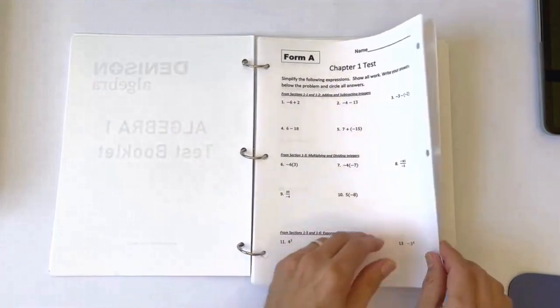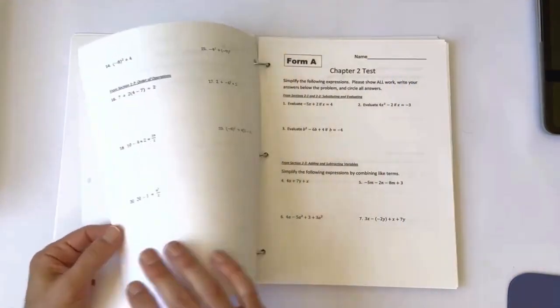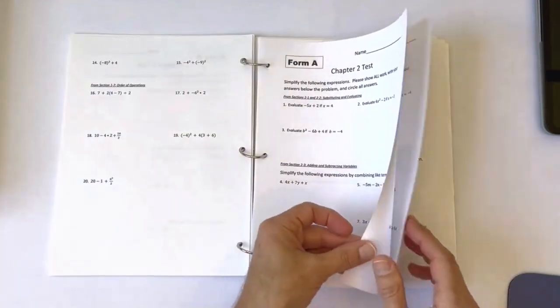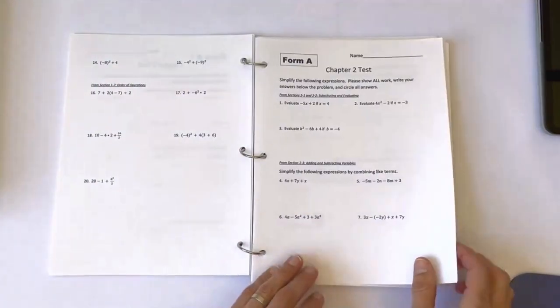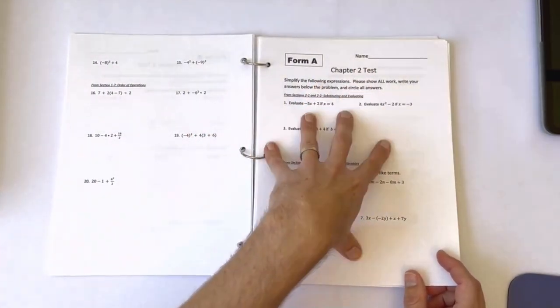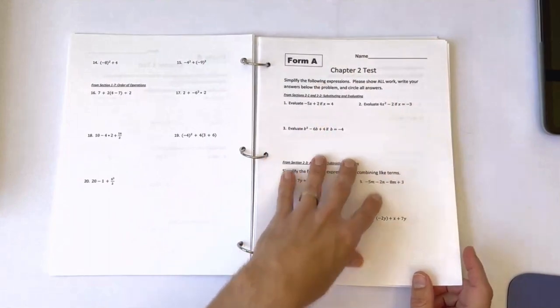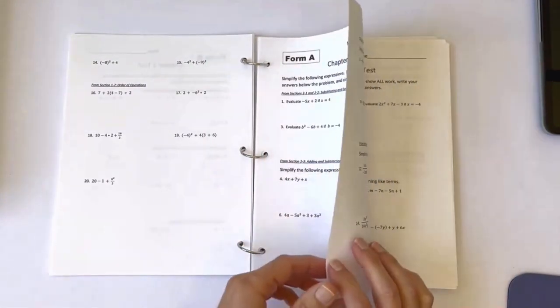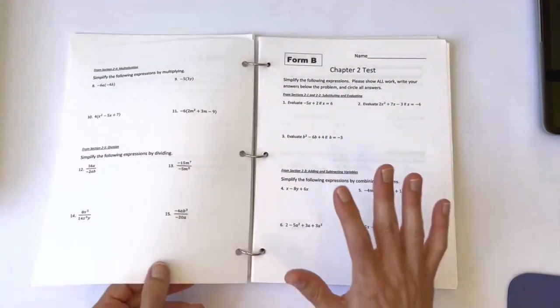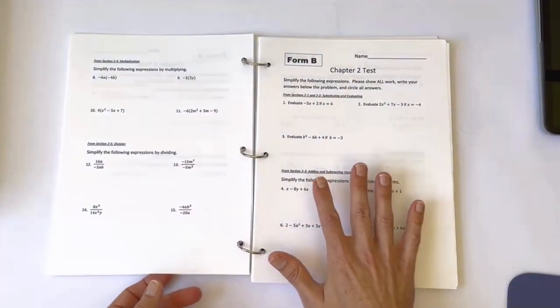There are two forms to each test, form A and form B. The tests are formatted the same, they just have different numbers. So if a student does not perform well on form A, then they can restudy, go over things that they missed, and retake the test using form B.